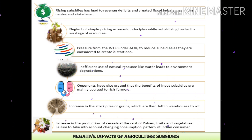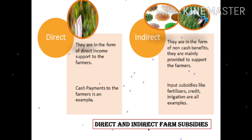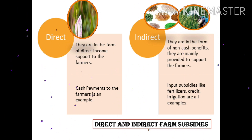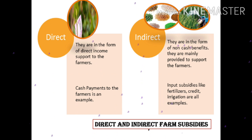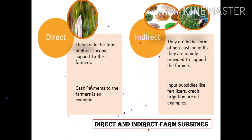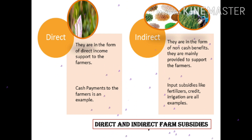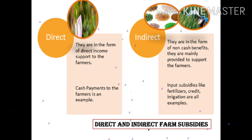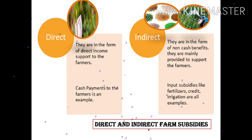There are two types of farm subsidies: direct farm subsidies and indirect farm subsidies. Direct farm subsidies give farmers cash directly. Indirect farm subsidies are a good source of inputs — input subsidies like fertilizer, credit, irrigation, and other things.